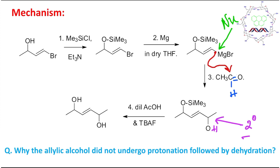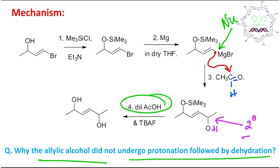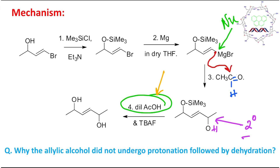The next step is silyl deprotection by the way, and dilute acetic acid is responsible for the workup. You may ask: why didn't the allylic alcohol undergo protonation followed by dehydration? It is true that allylic alcohols are prone for elimination, but remember that for protonation followed by elimination a stronger acid is required. In this case, dilute acetic acid is used — acetic acid itself is weak, and additionally it is diluted, so it is not strong enough to carry out that elimination reaction.